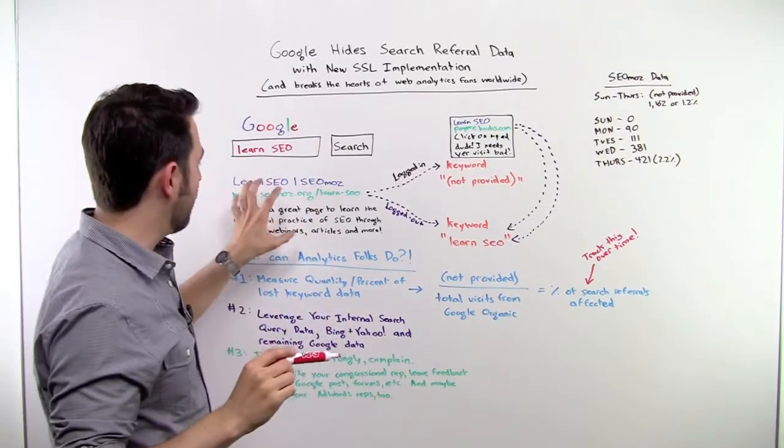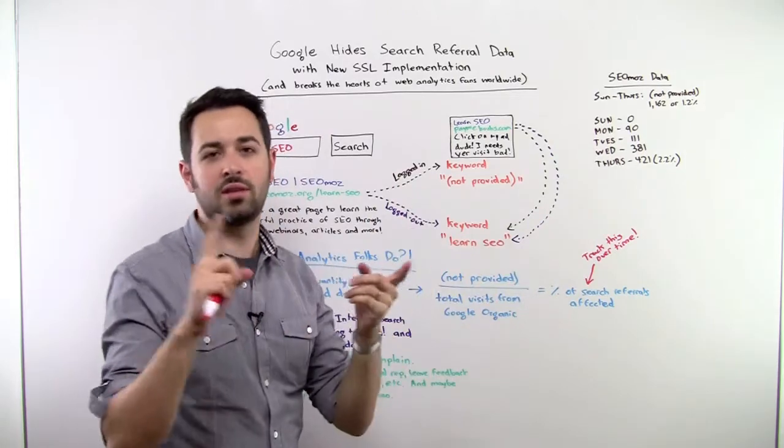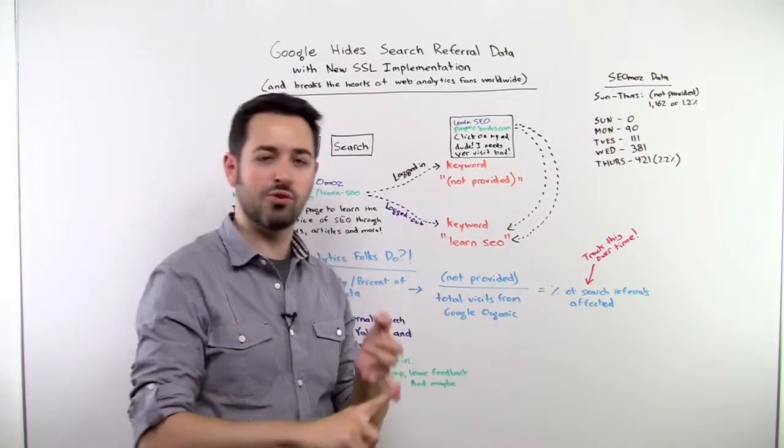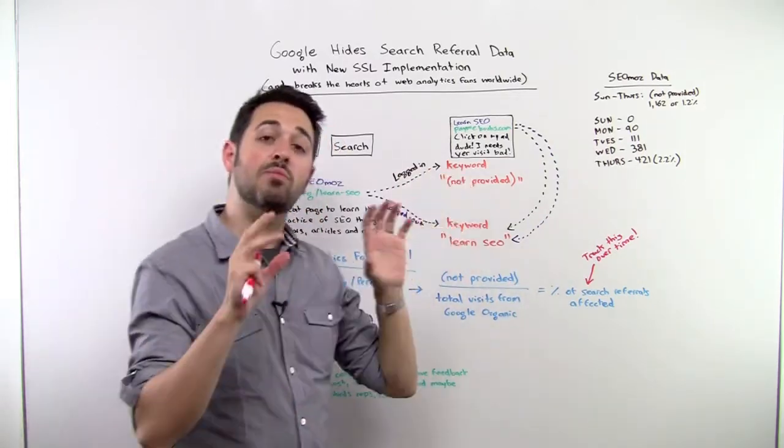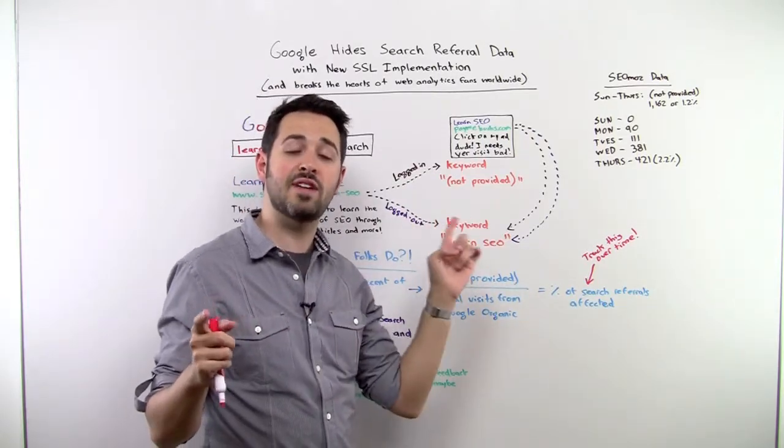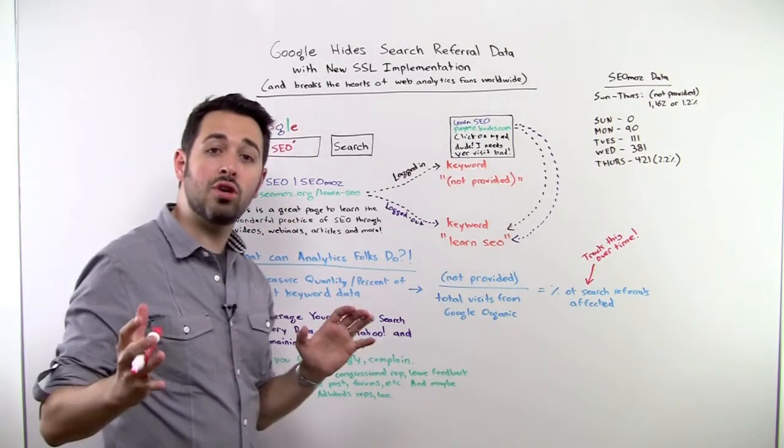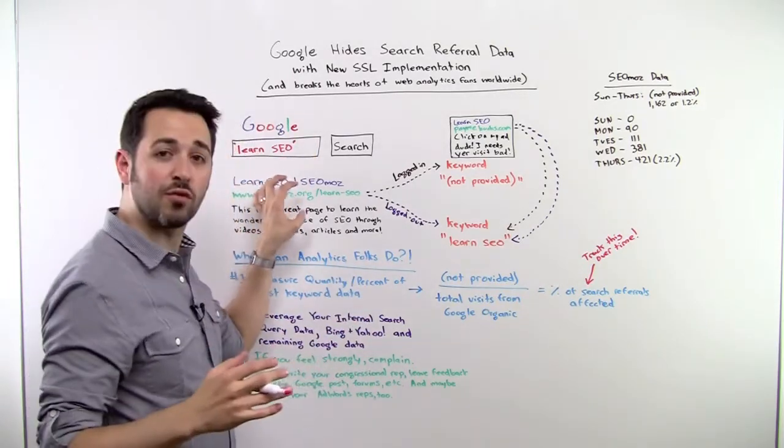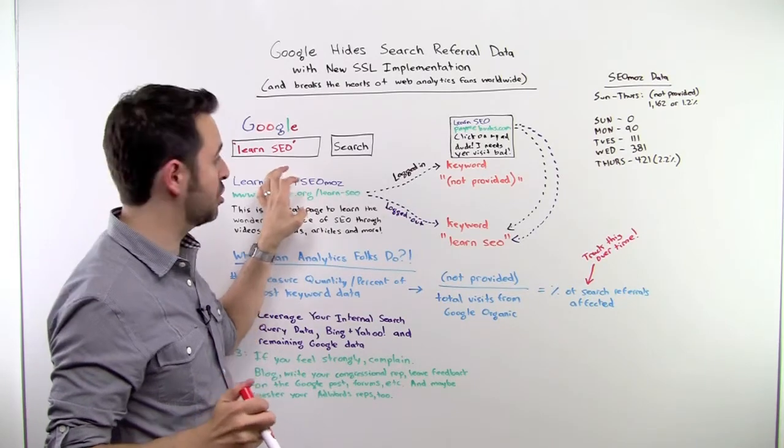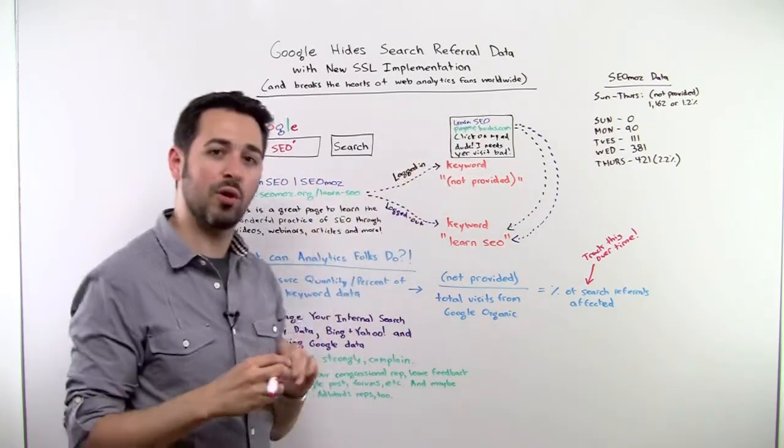Now, previously, if I were to click this result or this result, the web analytics tool, whatever it is, your Web Trends, your Omniture, your Google Analytics at the other end would get some referral data. So your log file would get some referral data about what sent that visit, which keyword sent that visit. So in this case, it would be Learn SEO sent a visit from google.com search over to my website, and it would track whether it's a paid or an organic ad.